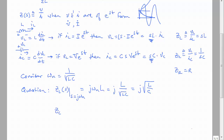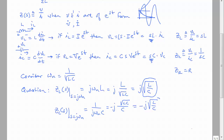If we do the same thing for the capacitor, the impedance at S = J·omega N is 1 over J·omega N times C. Multiplying top and bottom by J gives J in the numerator and J squared = -1 in the denominator. Replacing omega N with 1 over root of LC puts root of LC in the numerator and C in the denominator. Pulling C into the radical gives minus J times the square root of L over C. This quantity, square root of L over C, is the characteristic impedance.